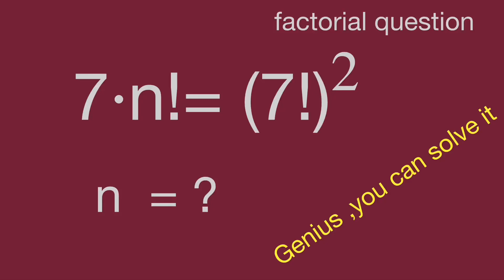Hello, you are watching Bala Hippo math genius readers. We have a nice factorial question: 7 times n factorial equal to the quantity 7 factorial squared. Find the value of n. Would you please try to find the answer if you are interested? Pause the video and give yourself a try. When you are ready, keep watching the video to find the result.